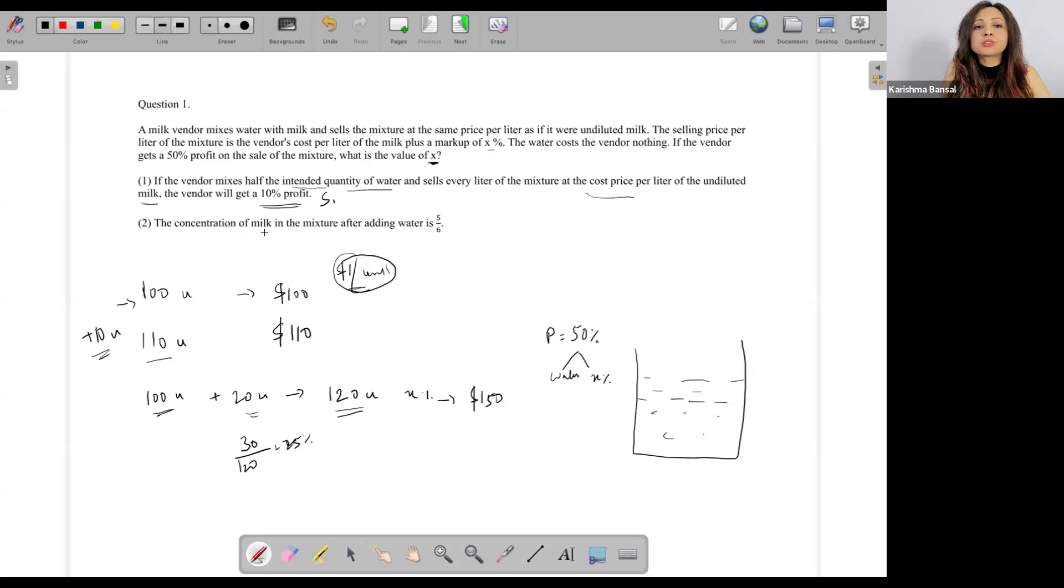Let's look at the second statement. The concentration of milk in the mixture after adding - forget about all this. Don't think about 100, 110, etc. That was a hypothetical situation where he said if he had added half the water. Now I don't have to think of that. Now I'm looking back at this data only, where 50 percent is the profit that he gets by doing two things: adding water and by taking a markup of X percent, assuming that this is undiluted milk. So then the concentration of milk in the mixture after adding water is 5 by 6.